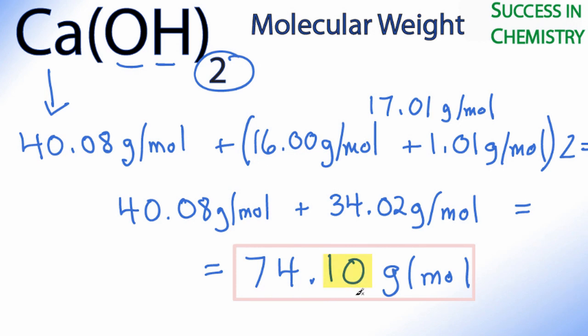And we need to have two decimal points here because we have two decimal points in all of our calculations above. So that's the molar mass or molecular weight for Ca(OH)₂, calcium hydroxide.